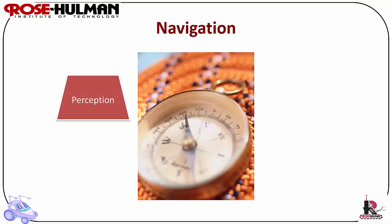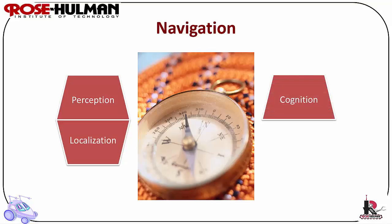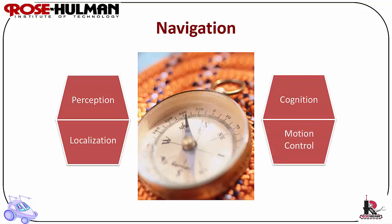Perception means the robot must interpret its sensors to extract meaningful data. Localization means the robot must determine its position in the environment. Cognition means the robot must decide how to act to achieve its goals. And motion control means the robot must modulate its motor outputs to achieve the desired trajectory.